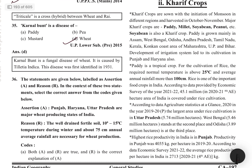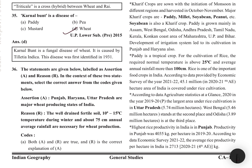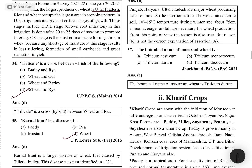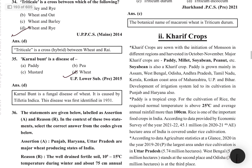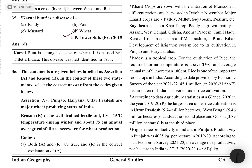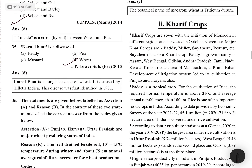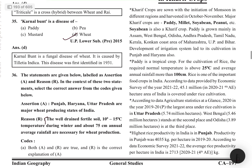Assertion-Reasoning MCQ: Assertion — Punjab, Haryana, and UP are major wheat producing states of India. Reason — Well-drained fertile soil, 10–15 degrees Celsius temperature in winters, and about 75 cm annual average rainfall is necessary for wheat production. Both statements are correct, but the reason does not explain the assertion. These are the conditions required for wheat, and both statements are independently true, but the reason does not specifically explain why those three states lead in production.